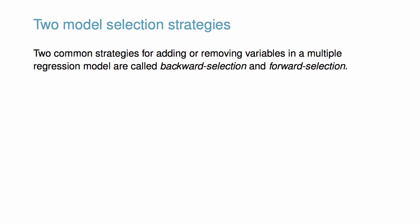Two common strategies for adding or removing variables in a multiple regression model are called backward selection and forward selection. These techniques are often referred to as stepwise model selection strategies because they add or delete one variable at a time as they step through the candidate predictors.